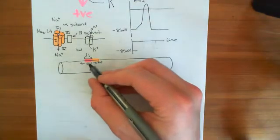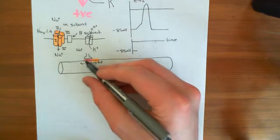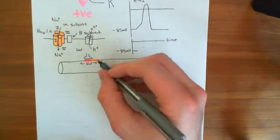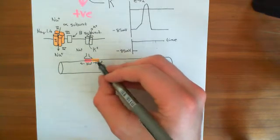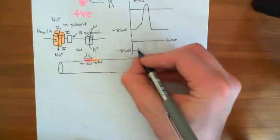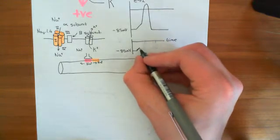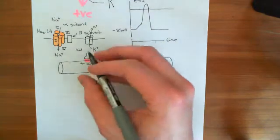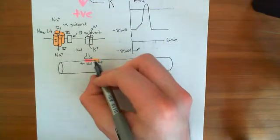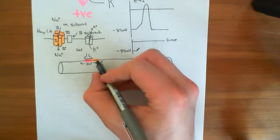When sodium diffuses from the intracellular compartment beneath the membrane undergoing an action potential to the next portion of membrane, that's going to depolarise the electrical potential difference across this membrane — providing the initial depolarisation. And if that depolarisation is above the threshold potential for the activation of NAV1.4 voltage-gated sodium channels in this next portion of the membrane, then this portion of the membrane will undergo an action potential too.